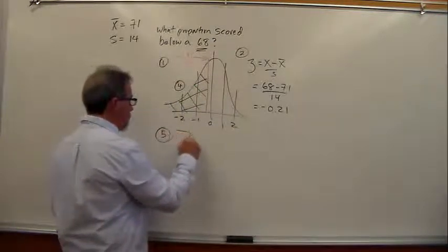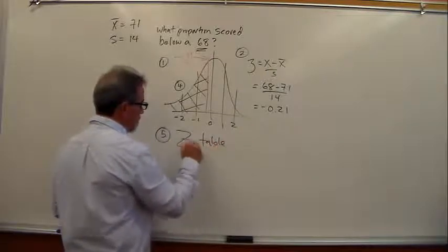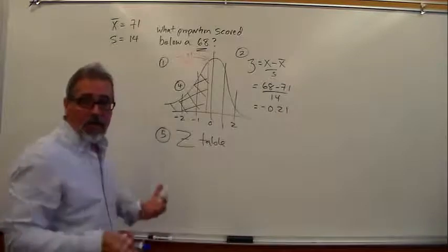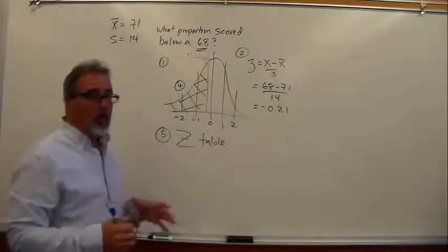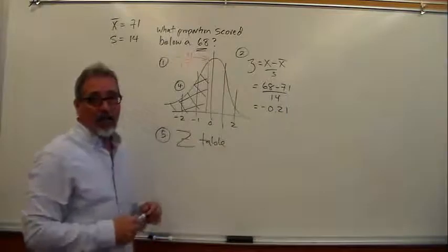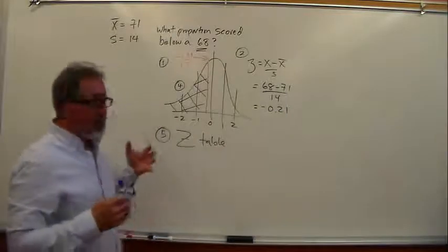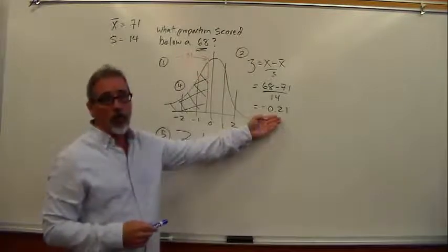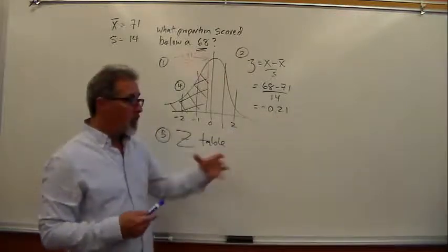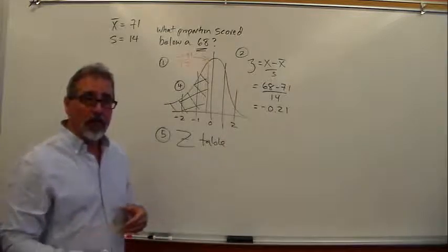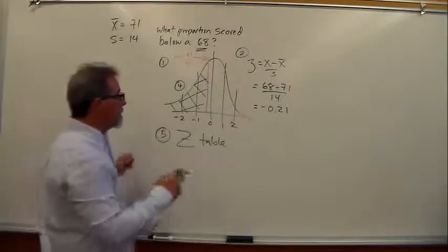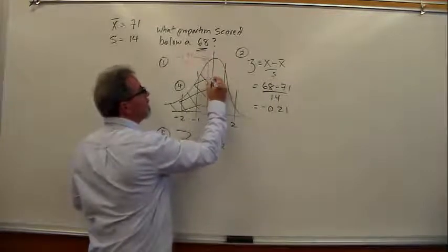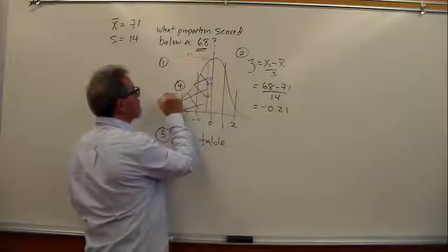And step five is going to the z table. But before we go to the z table, let's kind of get a feel for what we're looking for. Remember the z table only gives us half of the normal curve. You have the first column, which is where your z-scores are. So we're going to look for a z-score of 0.21 in column one. But then we have an option of either finding the proportion from column two or from column three. And what you have to get down is column two is always z to the mean and column three is always z to the end.